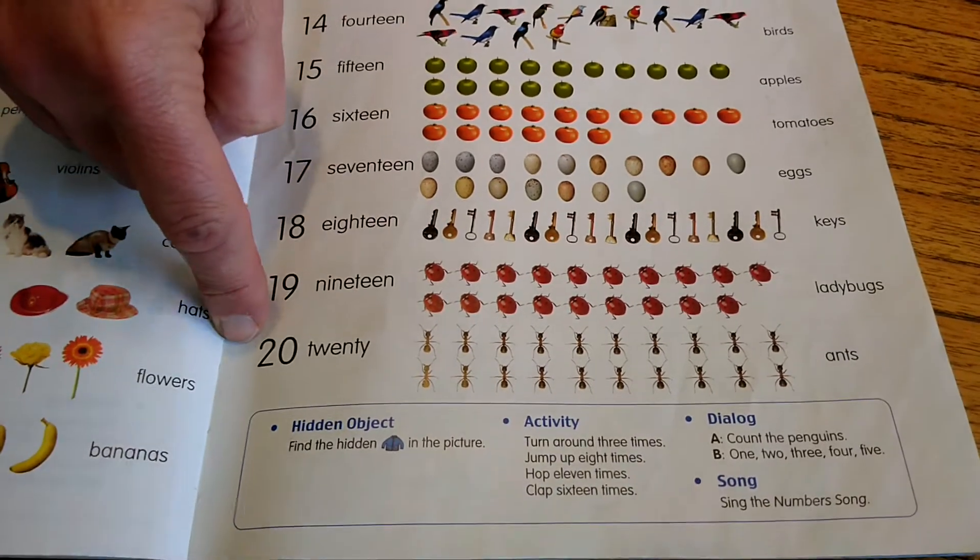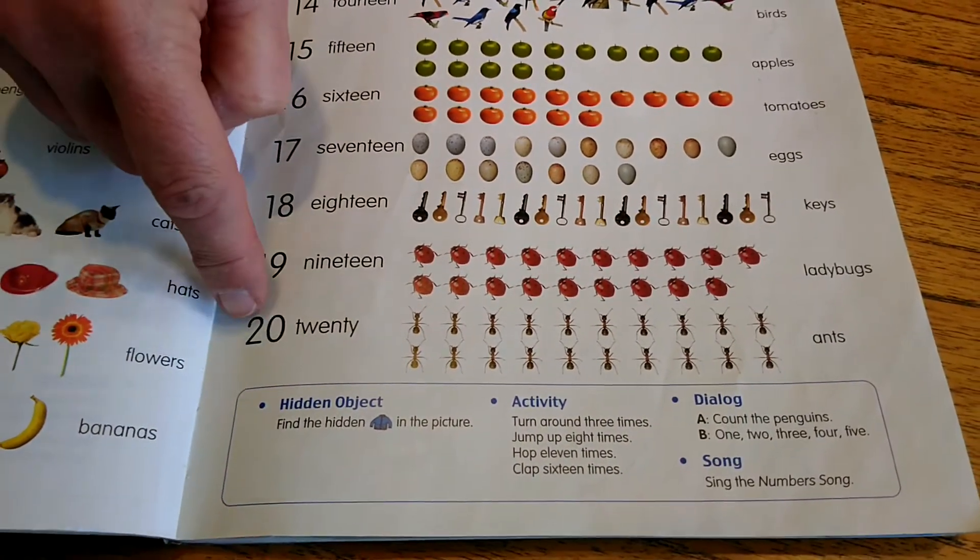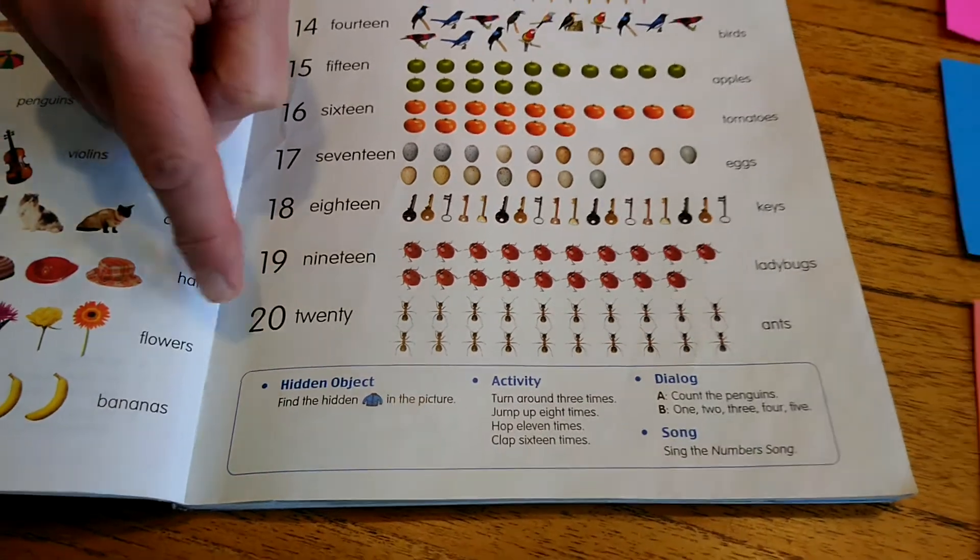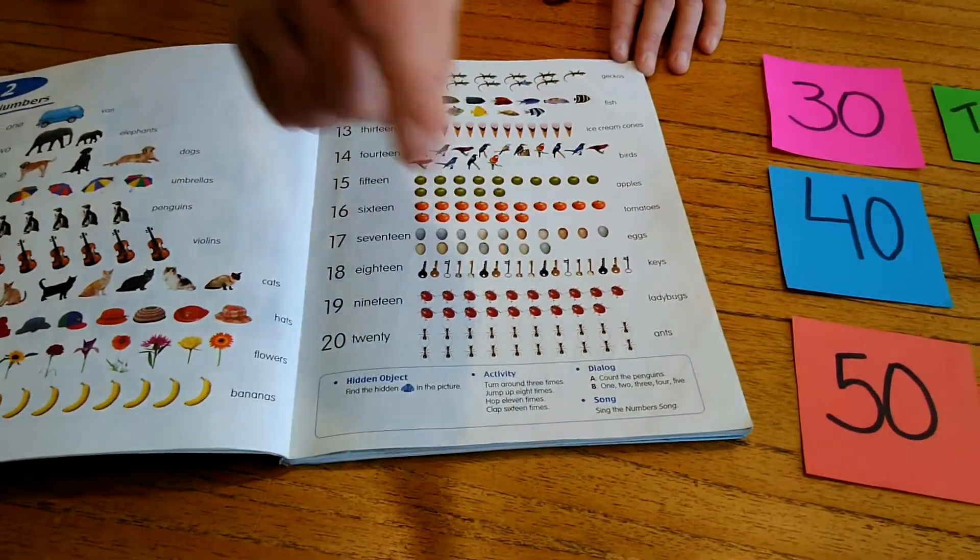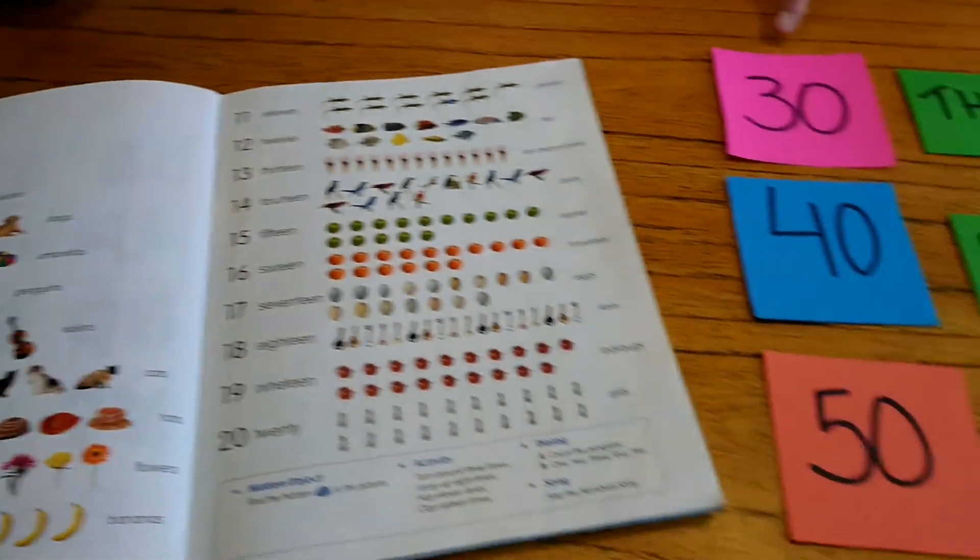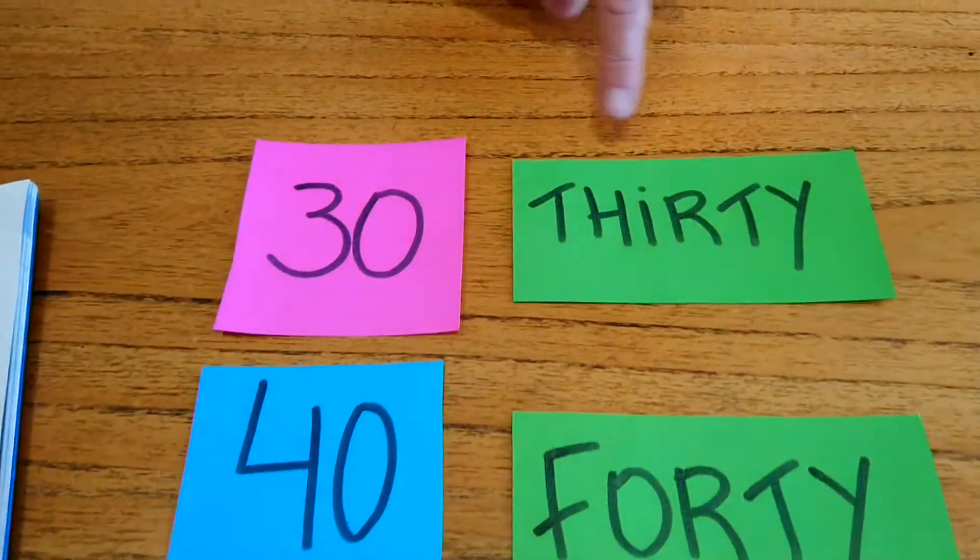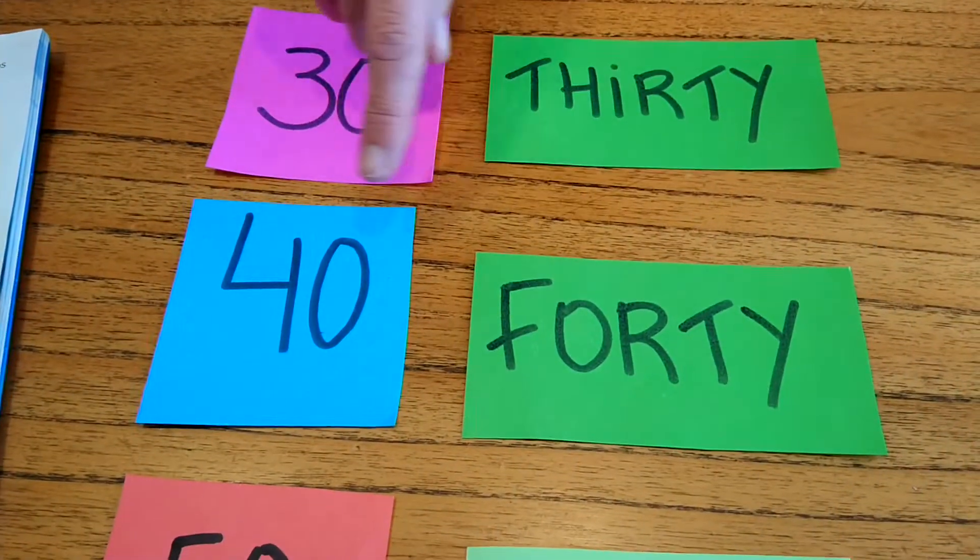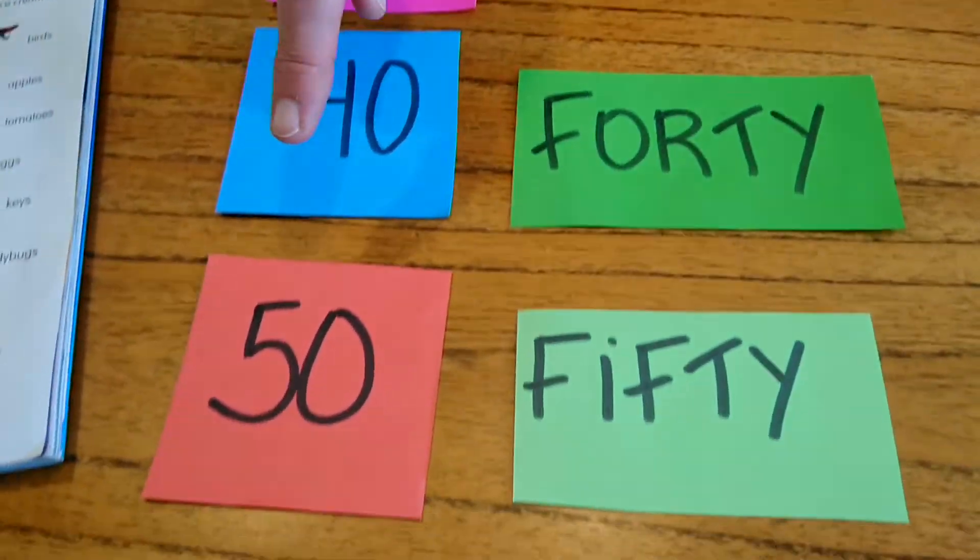Twenty. After twenty we have twenty-one, twenty-two, twenty-three, etcetera. Then you have thirty, forty, fifty.